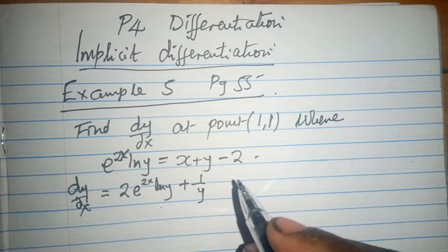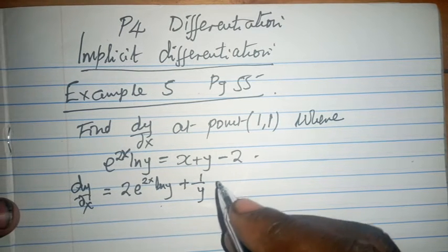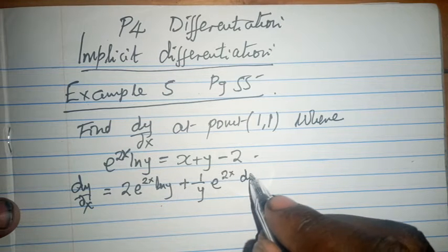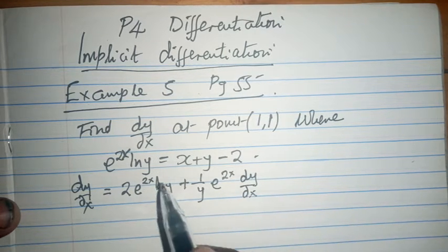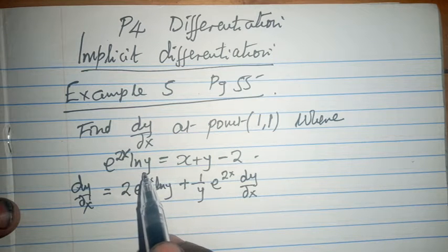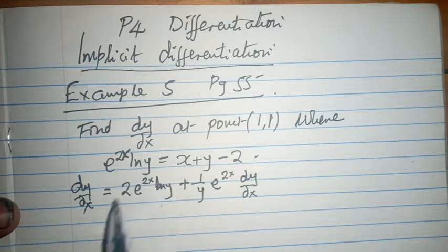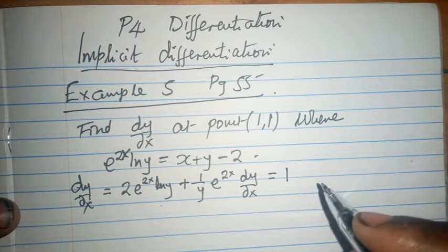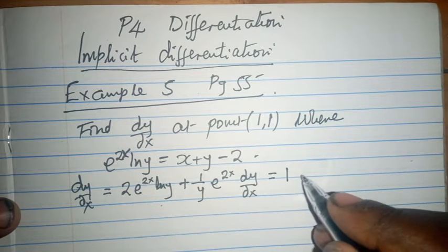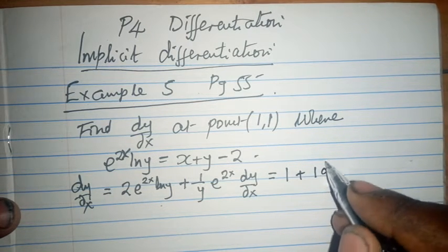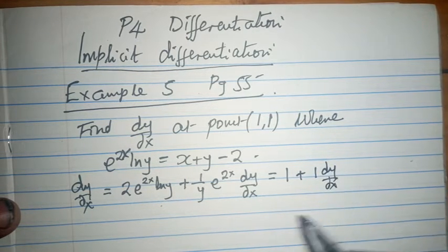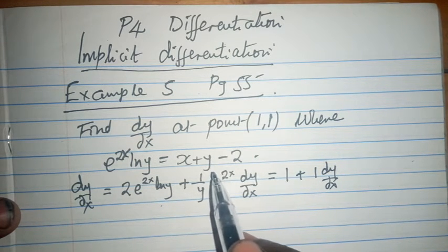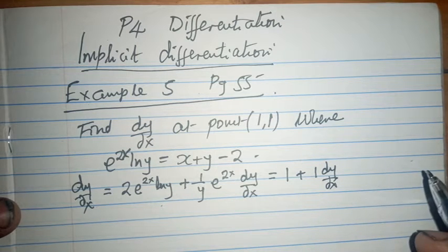ln y multiplied by e raised to power 2x, and remember this is dy/dx because we are focusing on y with respect to x, which equals 1. That is the end of the story as far as this one is concerned, plus 1 dy/dx. The differential of y is 1 and again we borrow a dy/dx at that particular point.